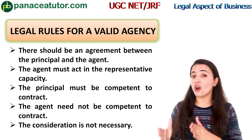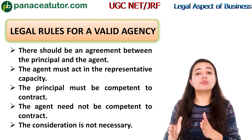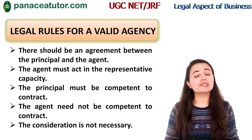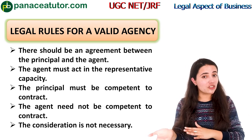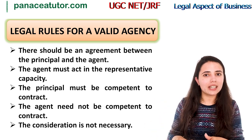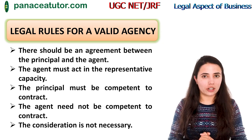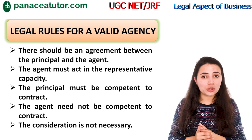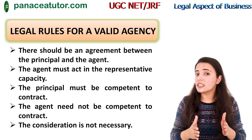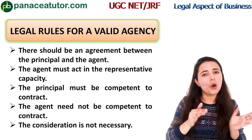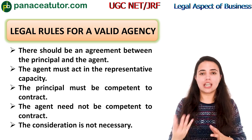The fourth rule is: the agent need not be competent to contract. The principal must be competent to contract, but the agent does not need to be. For example, a minor can be kept as an agent. These two points are very important: the principal must be competent, but the agent can be incompetent. The last rule is: consideration is not necessary for the creation of an agency. Unlike a regular contract, no consideration is required to create a valid agency.